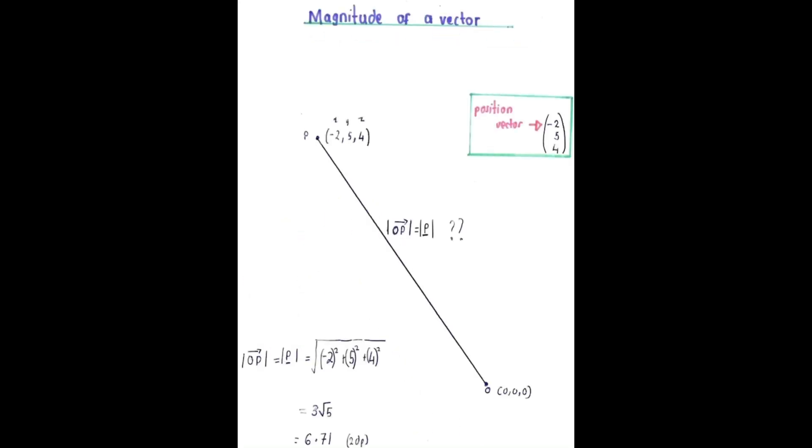The magnitude of a vector is the length of the position vector. The magnitude of this vector is usually denoted by this or this. Calculating the magnitude is done by doing this. It's similar to using Pythagoras theorem but with three dimensions instead.